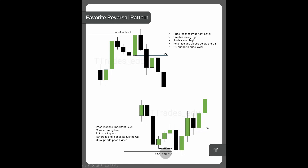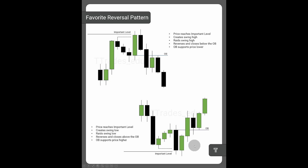Similarly, down here I have an important level resting below price. Price then creates a short-term low and raids this low. My eyes go to where this down-close candle or series of down-close candles is. When price closes over this down-close candle, I'm looking for it to support price higher. Let's get into the charts and look at a few examples.